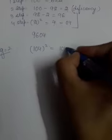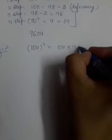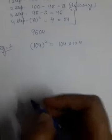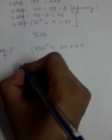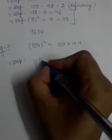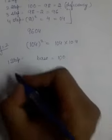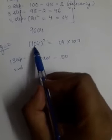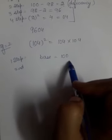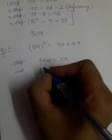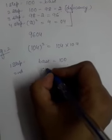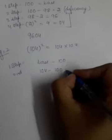Now take another example of 104 square. 104 into 104. The first step is same, you will choose the base. What will be the base here? We all know that is 100. Now next step, second step is you will see 104 is greater than 100. How much is it greater? 104 minus 100 is 4.